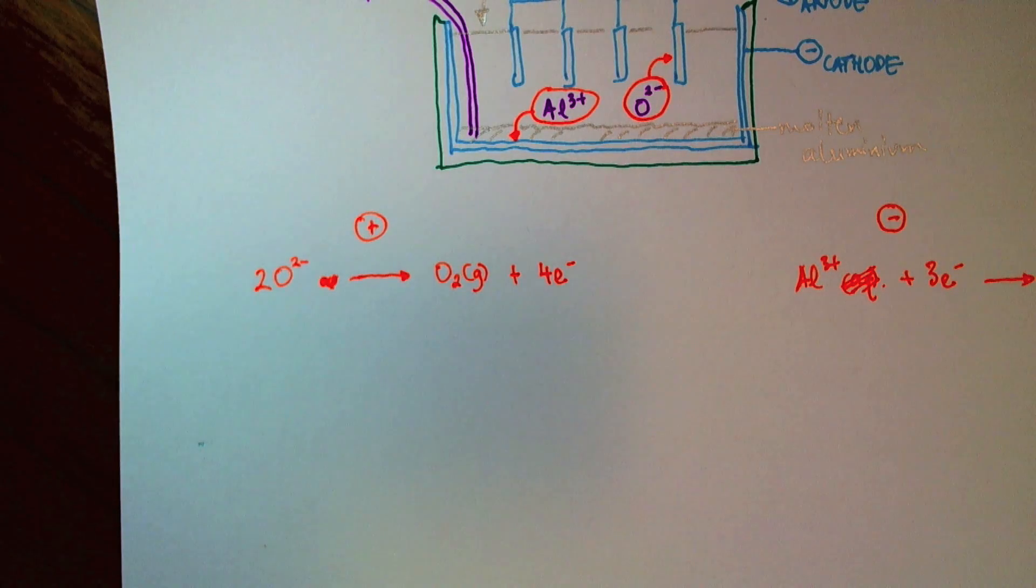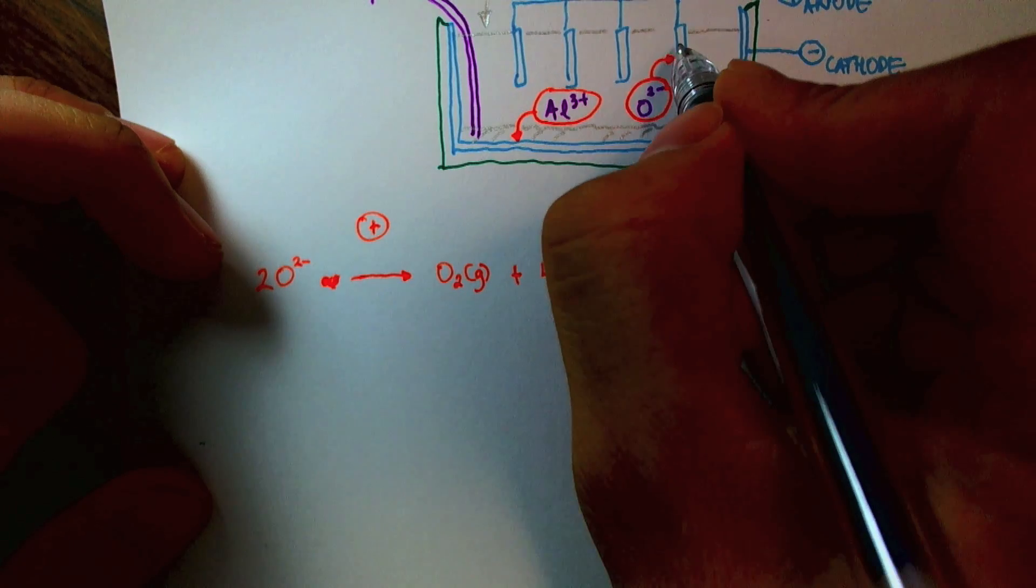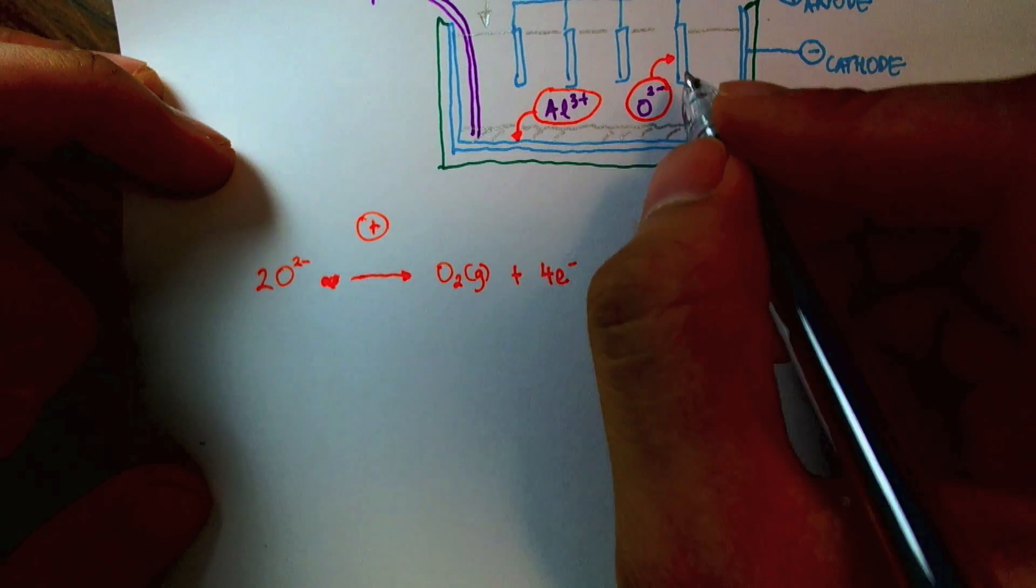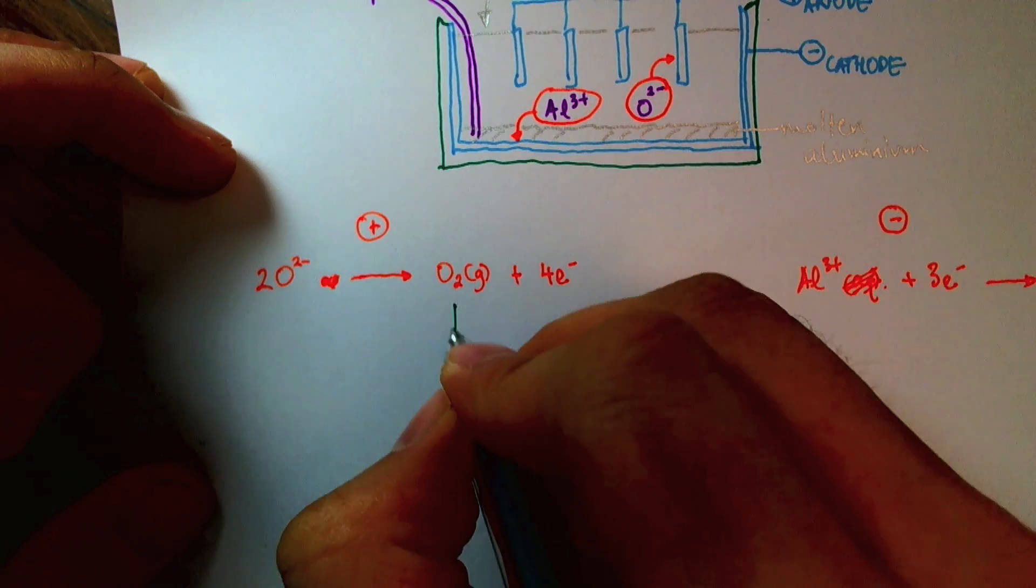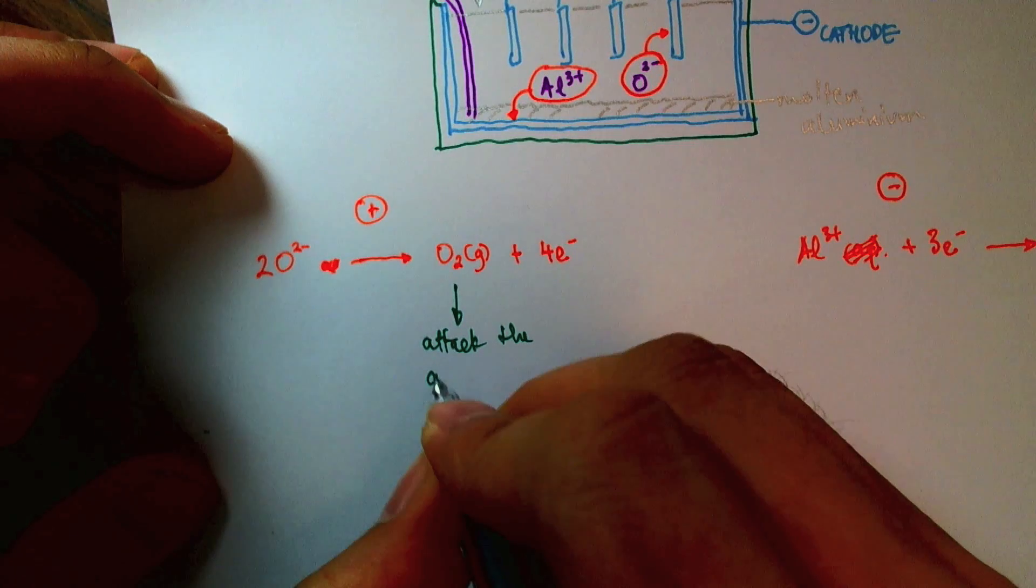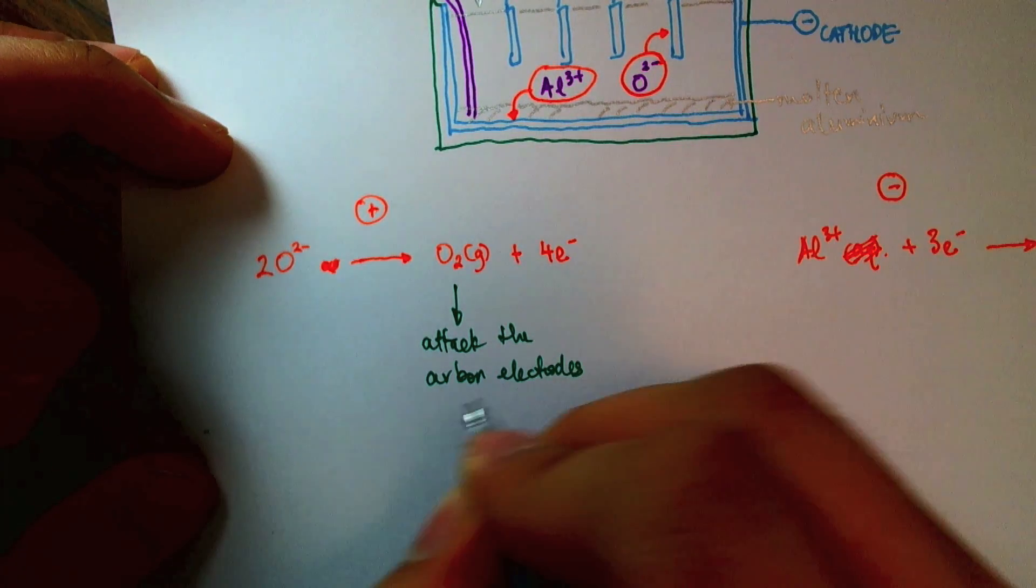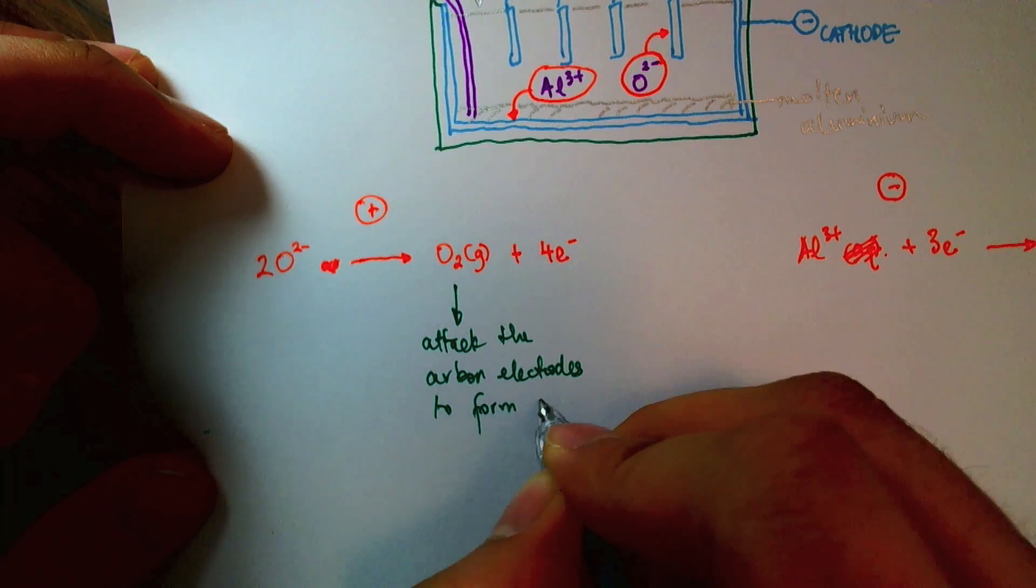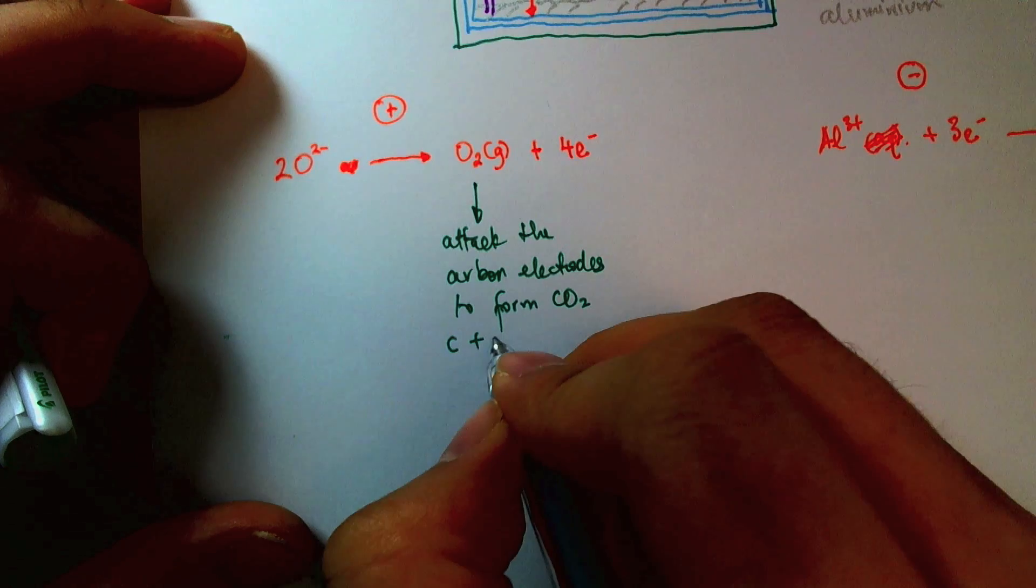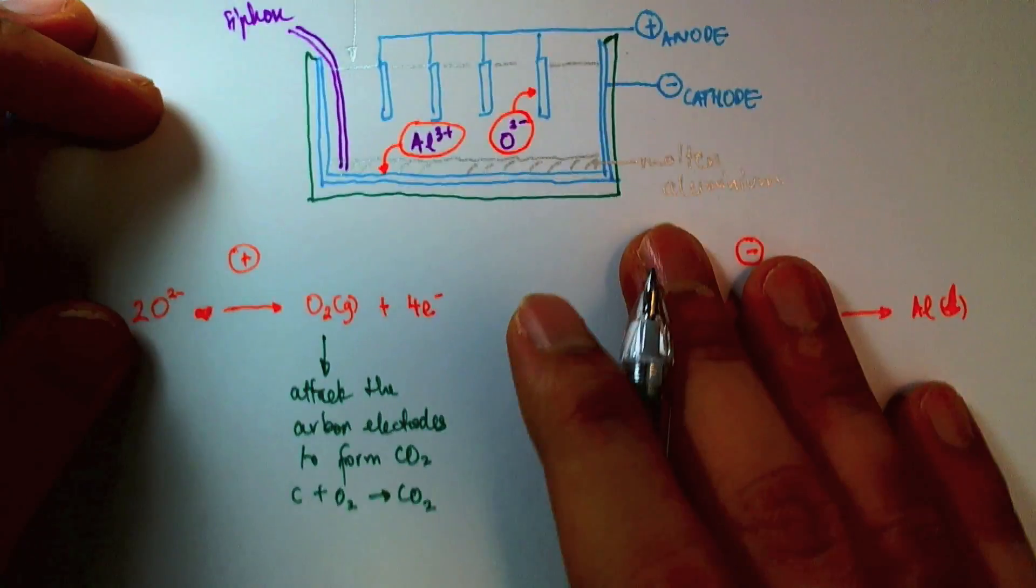Now this oxygen gas will react somewhat with the carbon electrodes here. So they react slightly. So we say that they attack the carbon electrodes to form carbon dioxide, because the carbon electrodes combine with the oxygen to form CO₂.